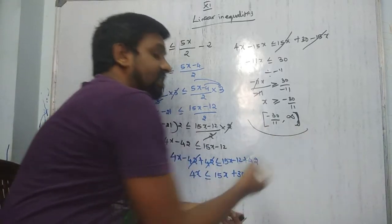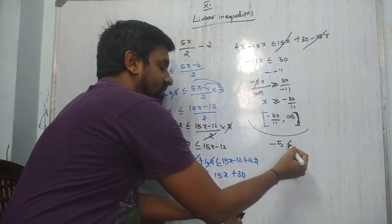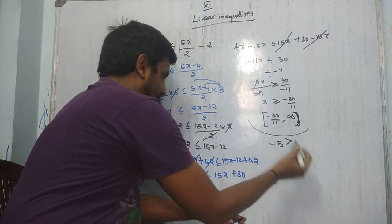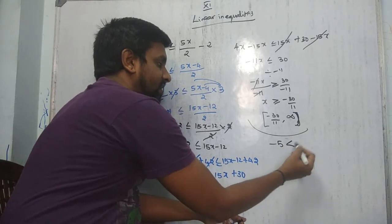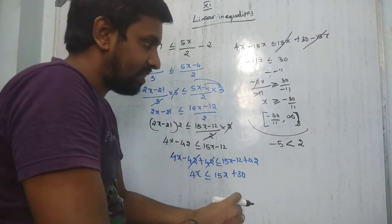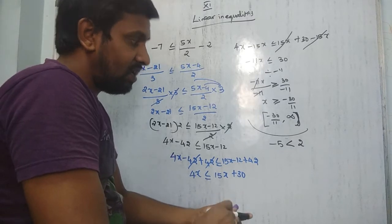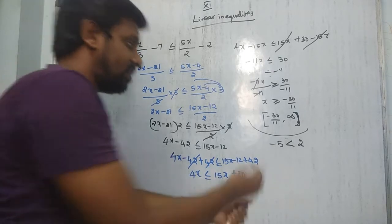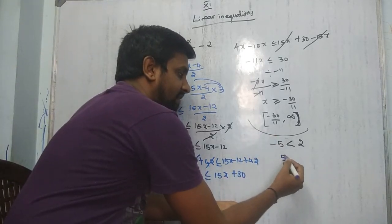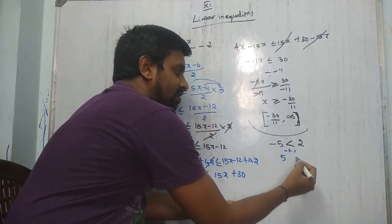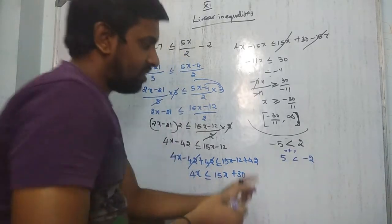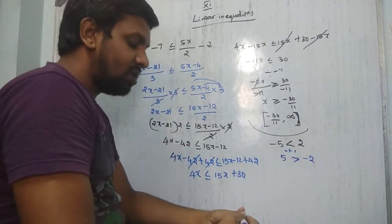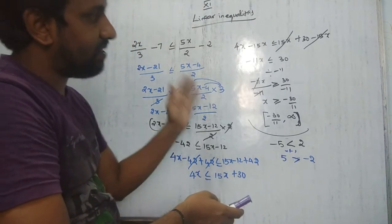Here is the reason why the inequality changes: suppose -5 < 2 — that is true. Now multiply both sides by -1: we get 5 and -2. Is 5 less than -2? No — it's false. So automatically the inequality must reverse. This is why, whenever you multiply or divide by a negative number, the inequality symbol changes direction.